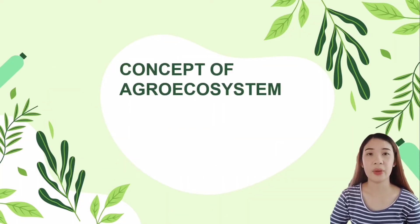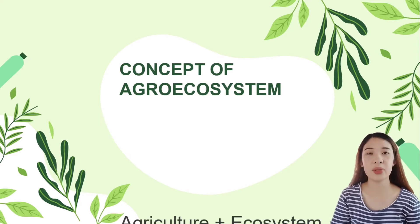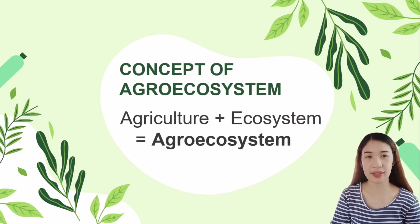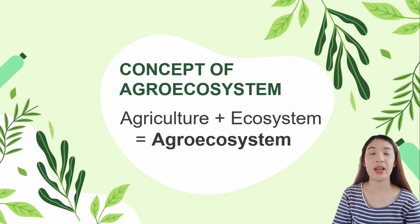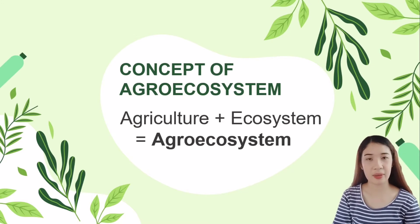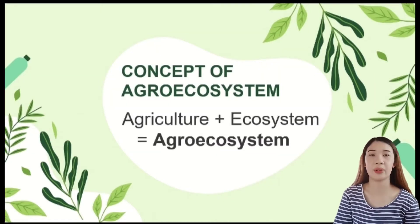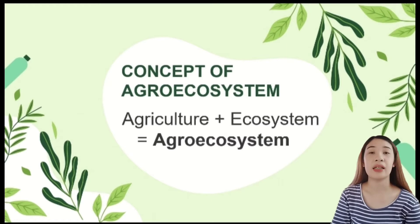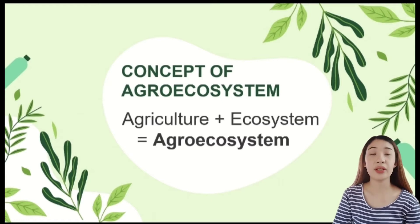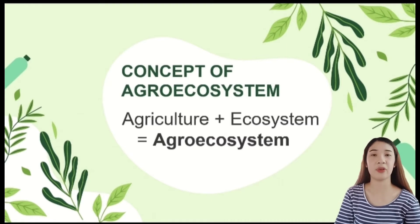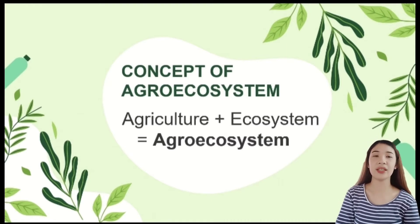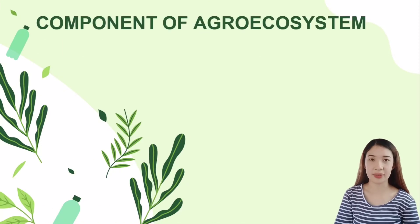Here is the concept of agro-ecosystem. Agriculture plus ecosystem equals agro-ecosystem. An agro-ecosystem is basically a functionally coherent unit of agricultural activity, which includes the living and non-living components and their interactions.